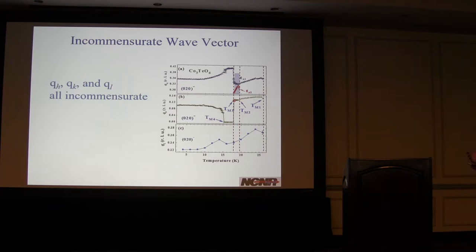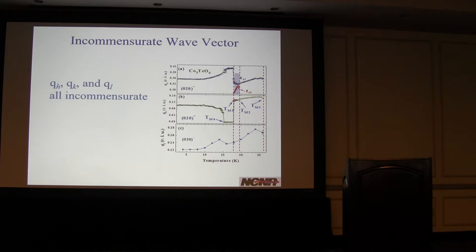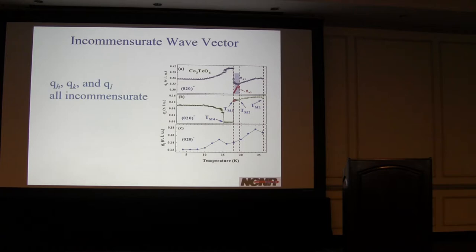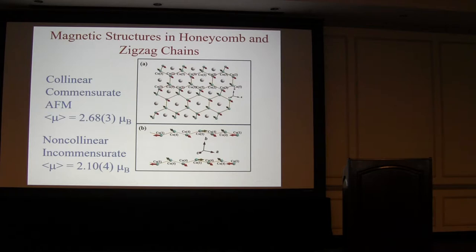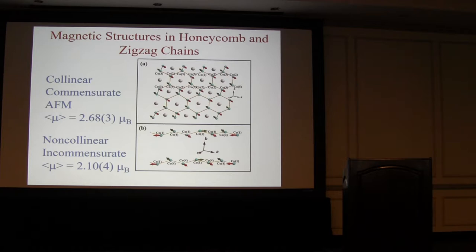Here are the incommensurate wave vectors; we've also done the L component, so the incommensurability is along all three directions—X, Y, and Z. We see the splitting of the H component but no splitting in either of the other components of the incommensurate wave vector. Then you get the drop and jump in the H value, a drop to zero in the K value, while the L component just continues without being affected by these transitions. We've combined our single crystal results—where we know exactly where all these wave vectors are—with powder diffraction to get a complete refinement as best we can, with still a few ambiguities.